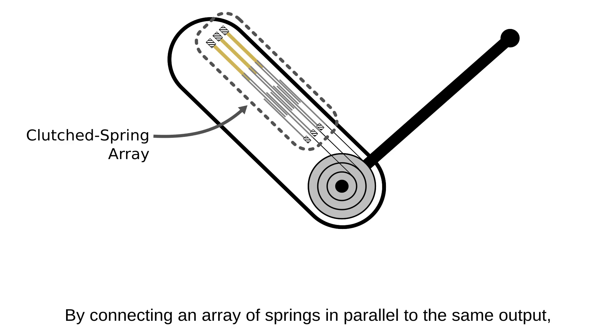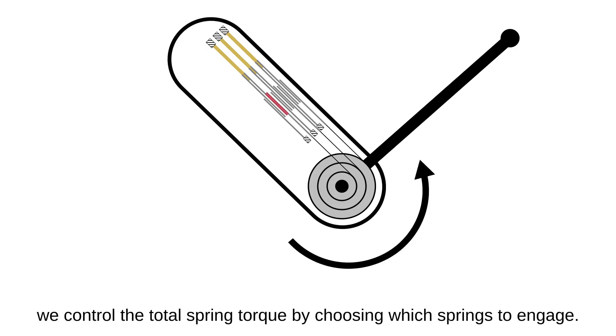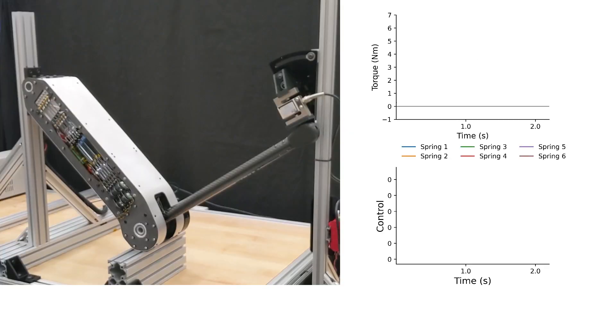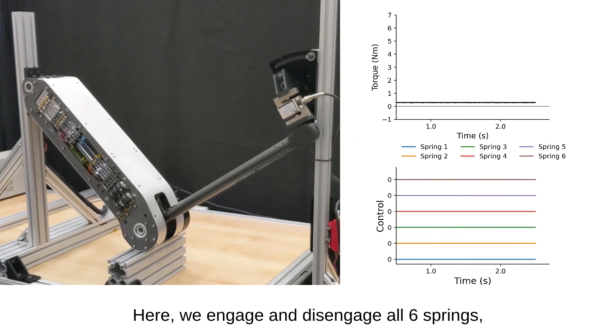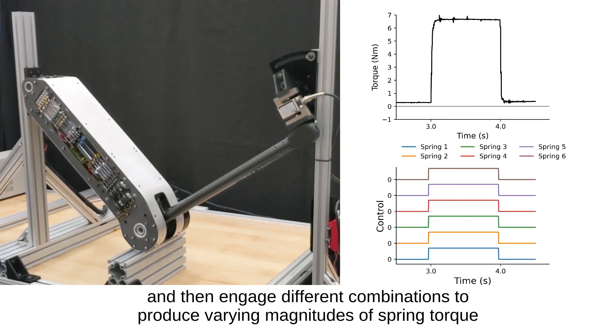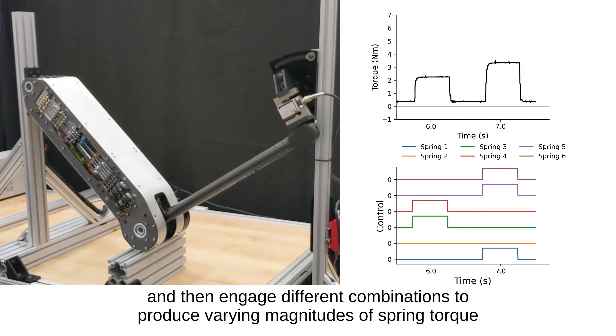By connecting an array of springs in parallel to the same output, we control the total spring torque by choosing which springs to engage. Here we engage and disengage all six springs, and then engage different combinations to produce varying magnitudes of spring torque.